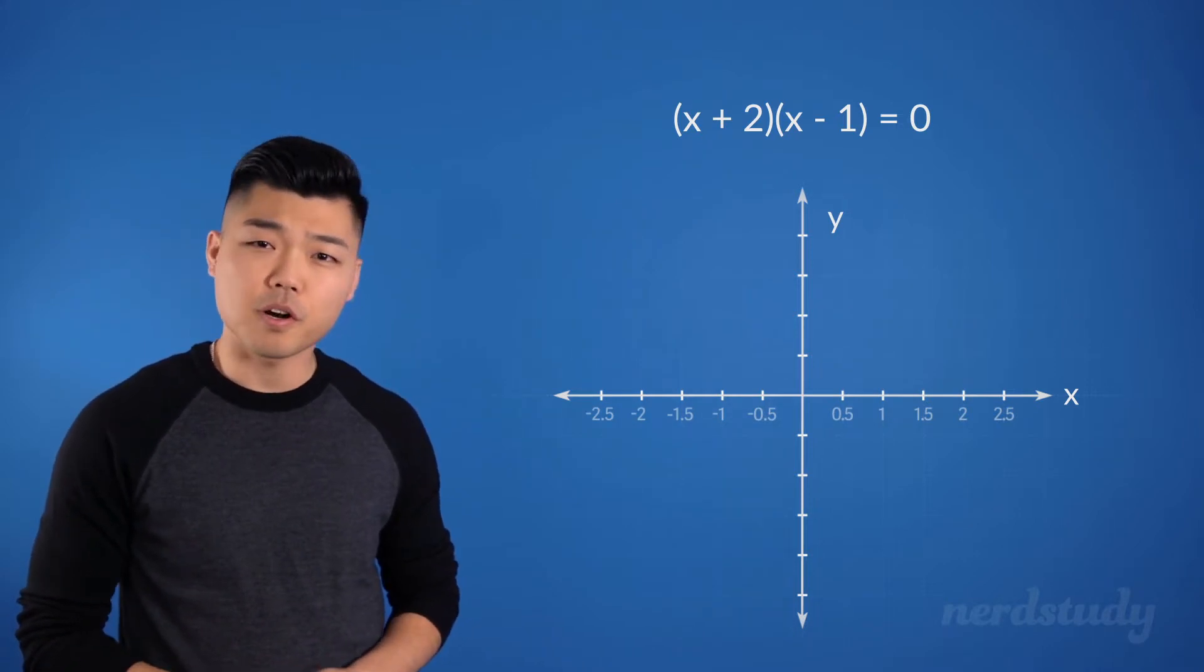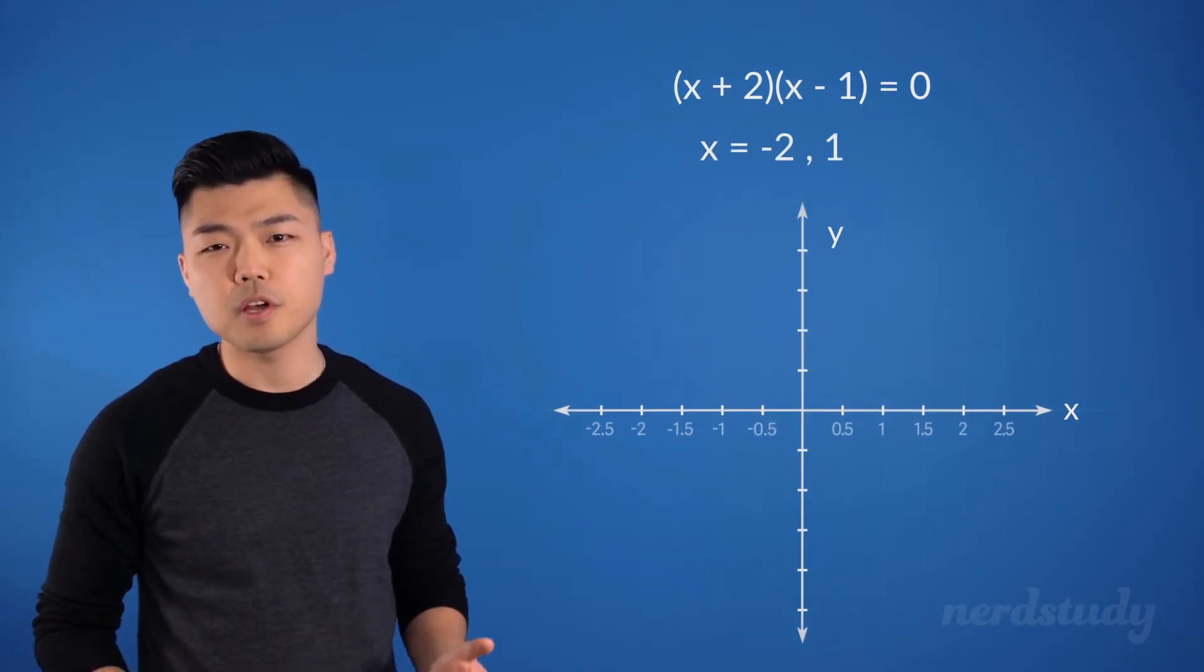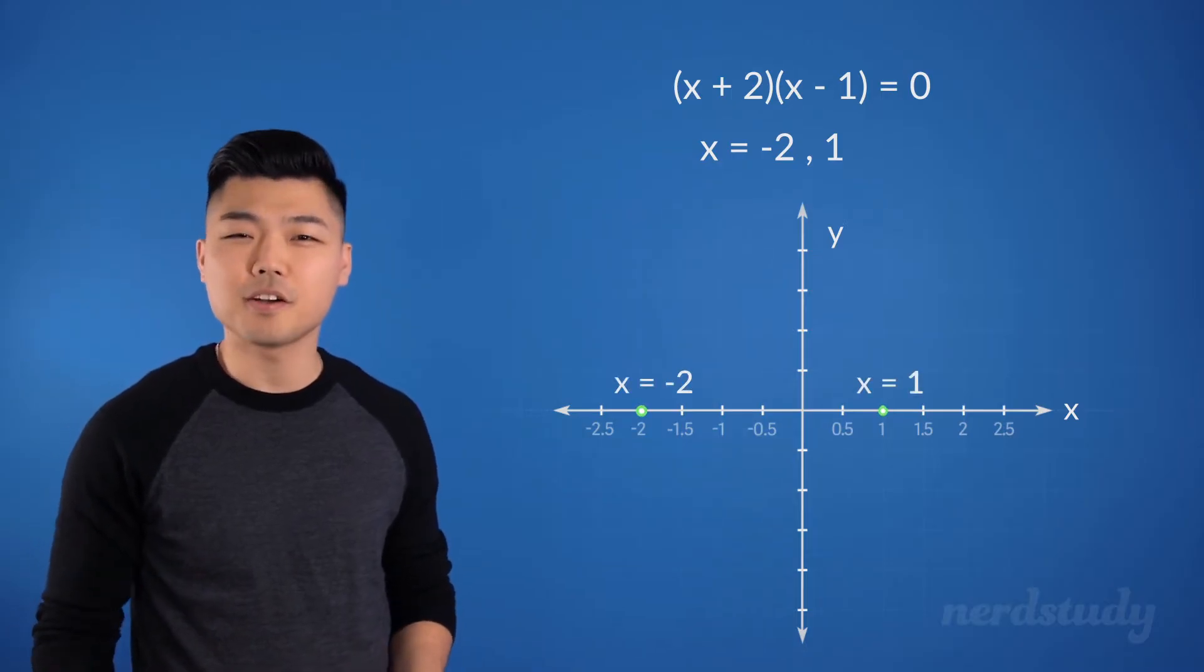Well, the zeros are easily given to us as x equals negative 2 and 1. So, we know that there is a point here and here on the graph.